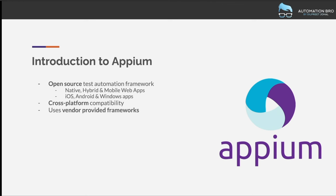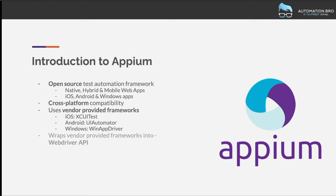Appium uses vendor-provided automation frameworks under the hood. For iOS it uses XCUITest, for Android it uses UIAutomator, and for Windows it uses Windows App Driver. These frameworks are provided by the vendors themselves, so we don't need to compile any Appium-specific or third-party code into our application. Appium wraps all these vendor-specific frameworks into a single API called the WebDriver API — the same client-server architecture used by Selenium WebDriver, extended with additional API methods for mobile automation.